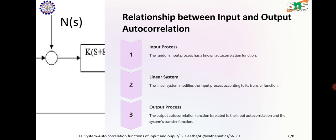Relationship between input and output autocorrelation. The random input process has a known autocorrelation function. The linear system modifies the input process according to its transfer function. The output autocorrelation function is related to the input autocorrelation and the system's transfer function.